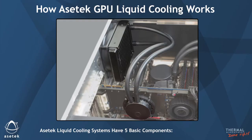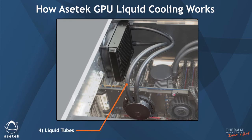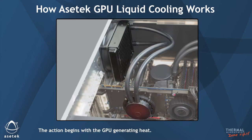Asetek liquid cooling systems have five basic components: pump, cold plate, radiator, liquid tubes, and cooling liquid. The action begins with the GPU generating heat.